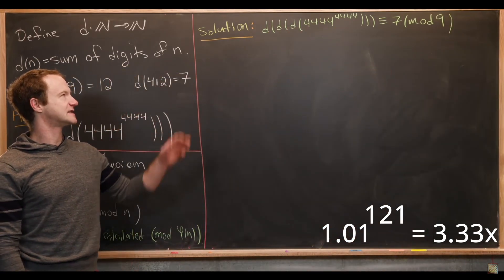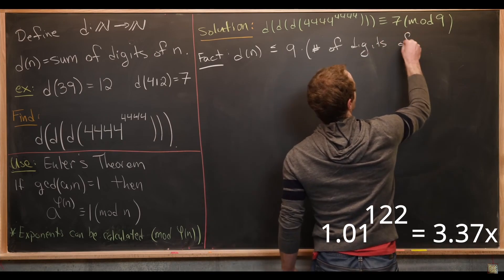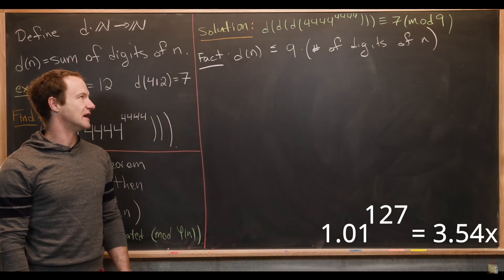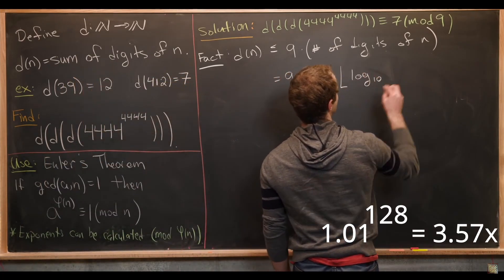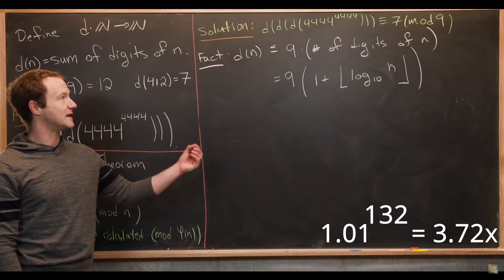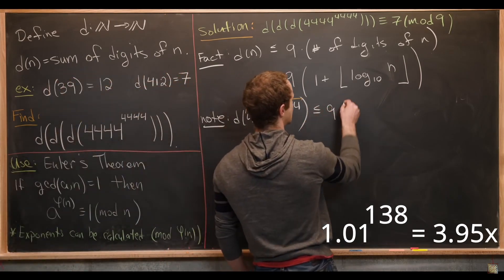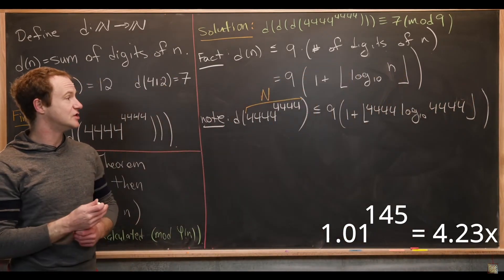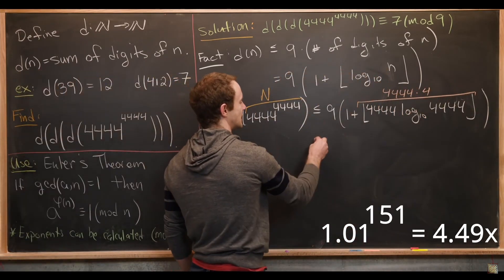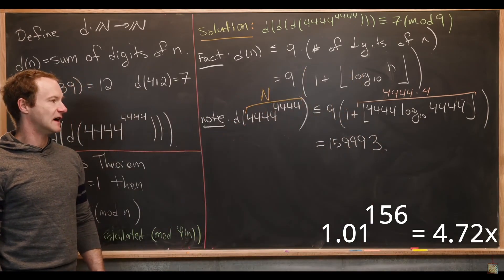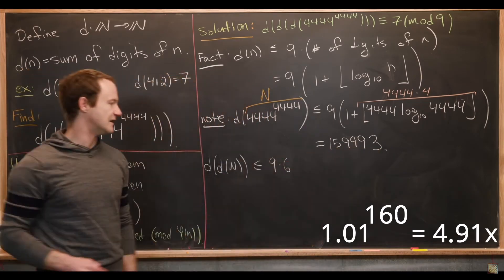We use the fact that d(n) is less than or equal to 9 times the number of digits of n, because adding the maximum digit 9 as many times as there are digits gives an upper bound. The number of digits of n equals 1 plus the floor of log base 10 of n. Applying this to our number N = 4,444 to the 4,444, we get d(N) is less than or equal to 9 times (1 plus 4,444 times log base 10 of 4,444), which gives 4 digits for that bound — roughly 15,333. So d(N) has at most 5 digits, meaning d(d(N)) is less than or equal to 9 times 5 equals 45, and d(d(d(N))) is less than or equal to 54.